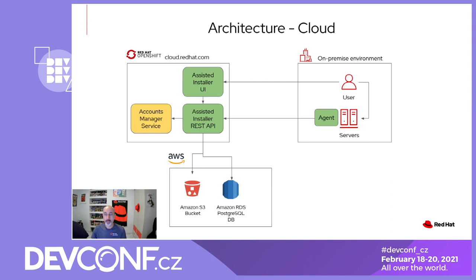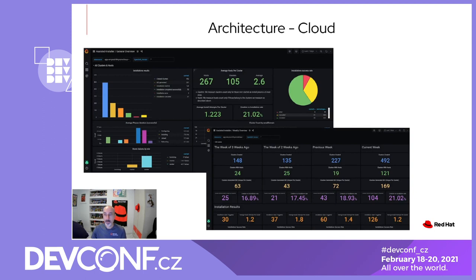On the live ISO that runs on the bare metal, there is a process called Agent that communicates with the service via REST API. On the newly created operative cluster, there is a job called Assisted Controller that approves nodes and reports final progress to the Assisted service. It is needed because after all hosts boot from disk after the installation, the agent is no longer running. Since the Assisted Installer is running as a SaaS, we get a few advantages: we are able to release features more often and fix bugs faster, and we also collect metrics about usage and analyze installation failures for future improvements. Here is a screenshot of some of the Grafana dashboards that we use.